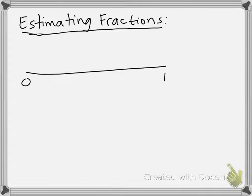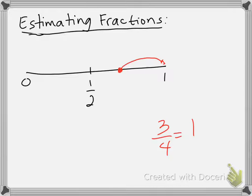On the number line I have 0 and 1, and right in the middle I have 1/2. So if I have, for example, 3/4 and I think about my number line, 3/4 is going to be around over here — that means 3/4 is closer to 1, so I'm going to estimate 3/4 as 1 whole. That simple.